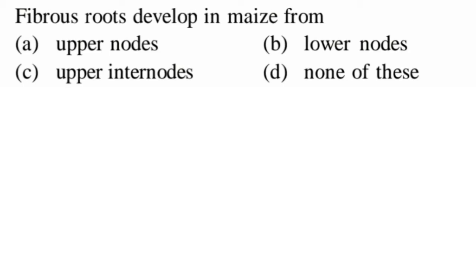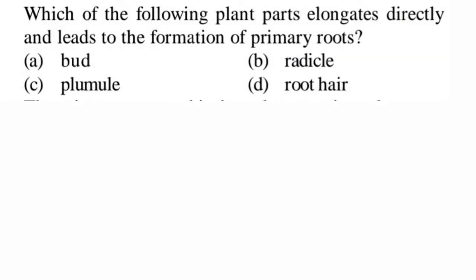Next question: fibrous roots develop in maize from — in maize we see a type of fibrous root called stilt roots, which are adventitious roots that originate from the lower nodes of the maize plant. So option B is correct — it's a direct question.